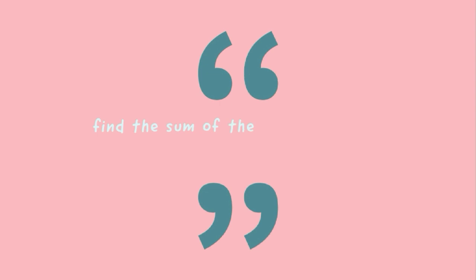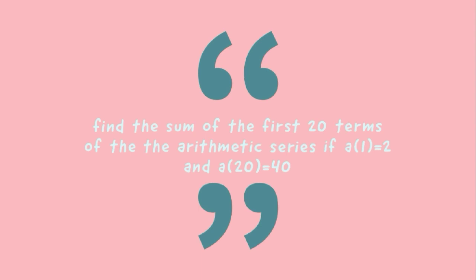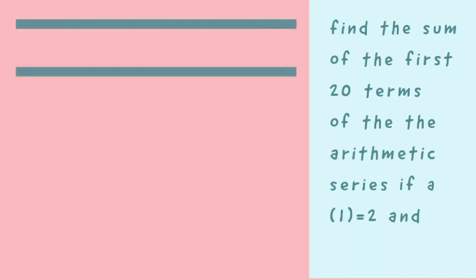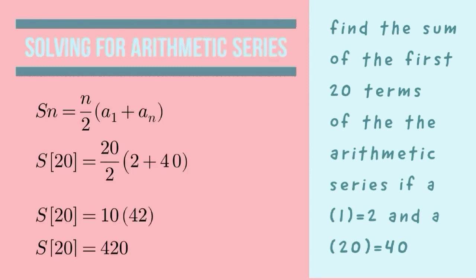Find the sum of the first 20 terms if a sub 1 equals 2 and a sub 20 equals 40. Since we have the first term, last term, and number of terms, we use: s sub n equals (n divided by 2) times (a sub 1 plus a sub n). Substituting: s sub 20 equals (20 divided by 2) times (2 plus 40). Performing the operations: s sub 20 equals 10 times 42, giving us s sub 20 equals 420.